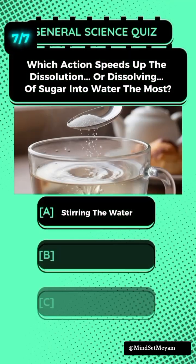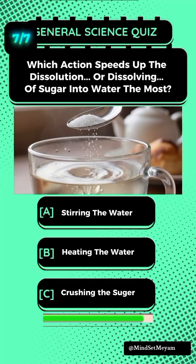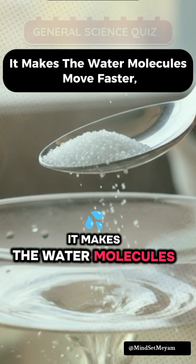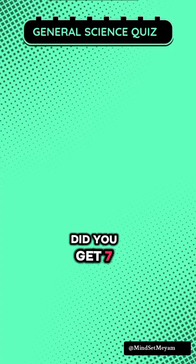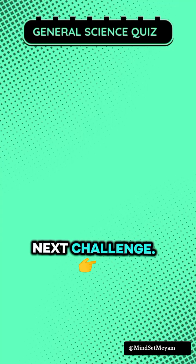Question 7: Which action speeds up the dissolution or dissolving of sugar into water the most? It is B: Heating the water. This makes the water molecules move faster, colliding with the sugar more often. Did you get 7 out of 7? Drop your score and follow now for your next challenge.